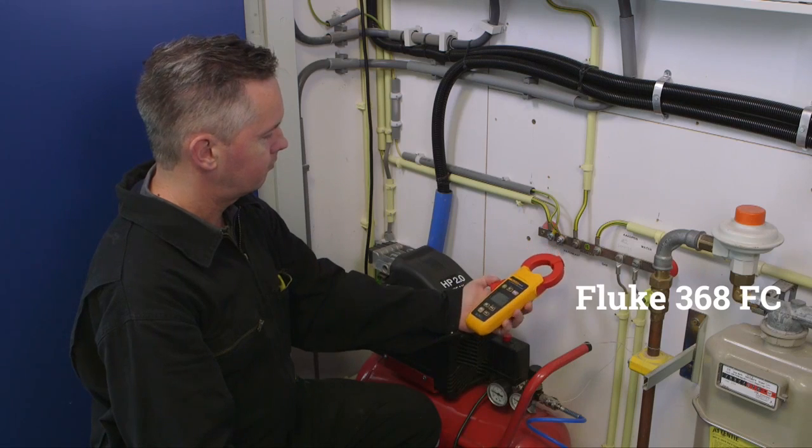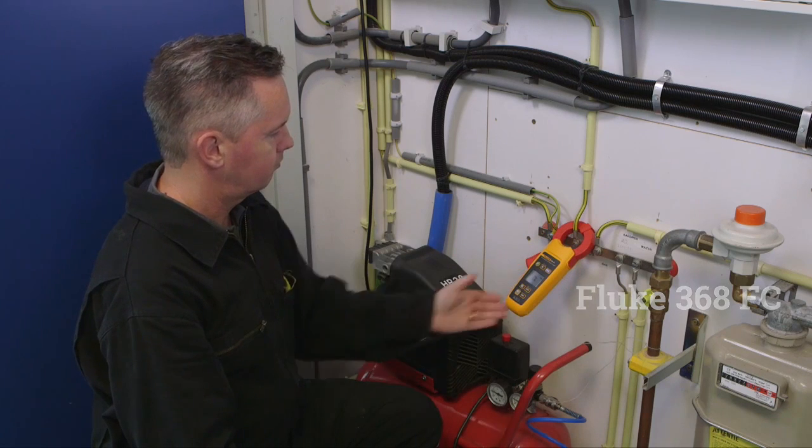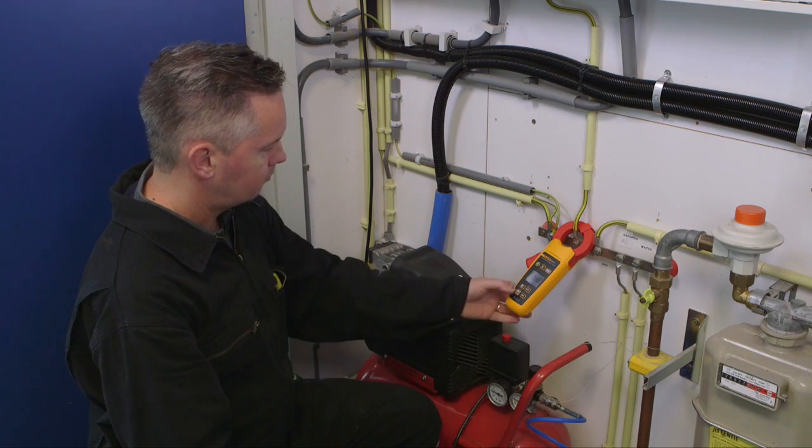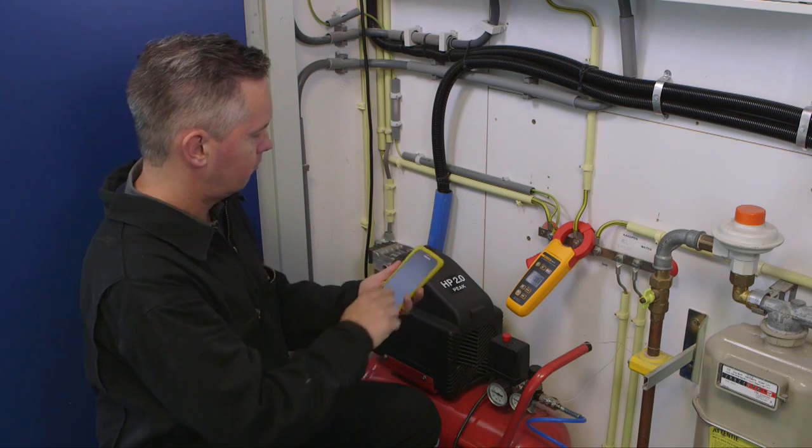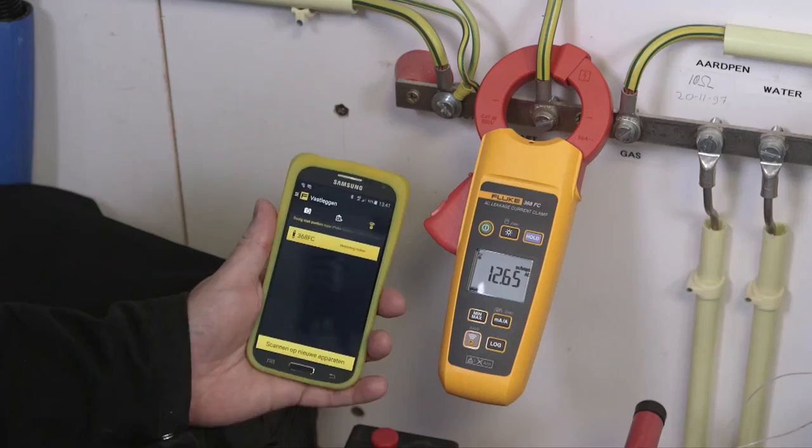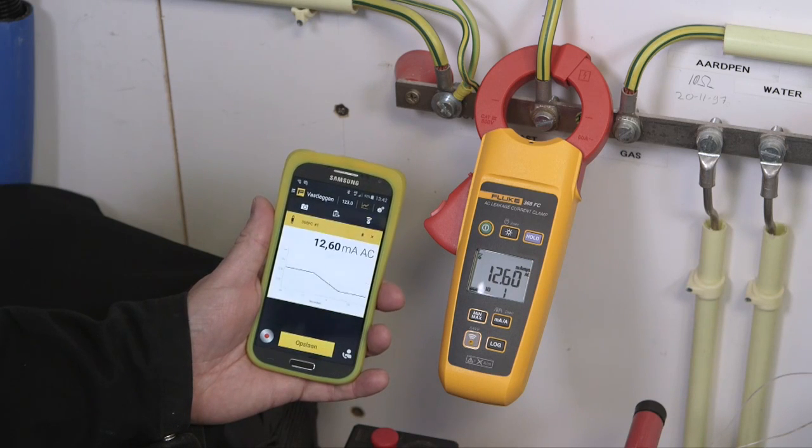The Fluke 368 FC leakage current clamp helps to detect leakage current, prevent unplanned downtime and identify intermittent GFCI and RCD trips, all without taking equipment offline. The Fluke 368 FC has a large 40mm diameter jaw for work with large conductors.